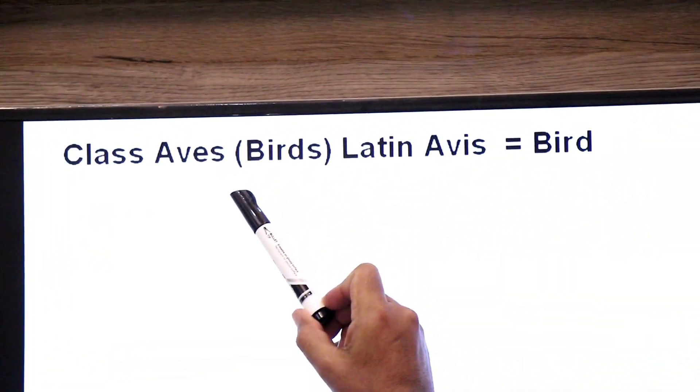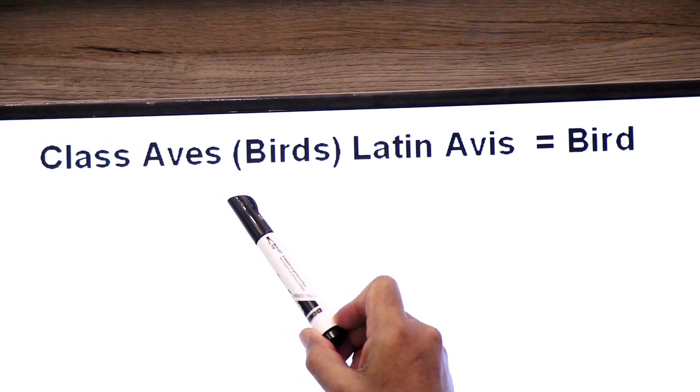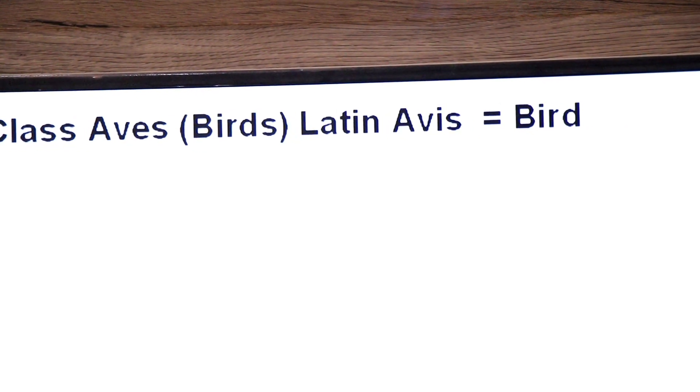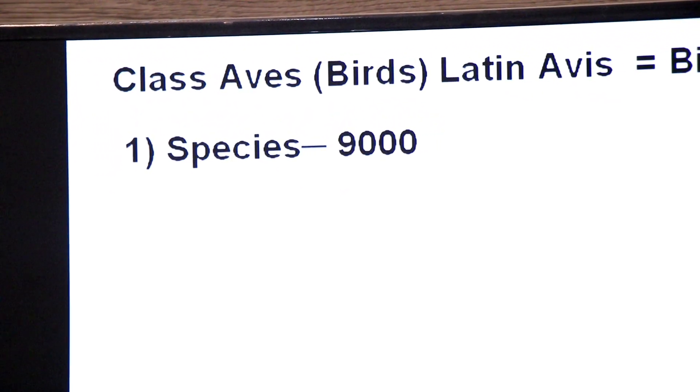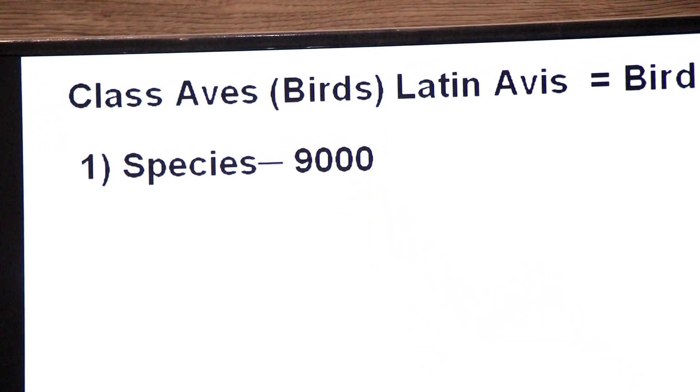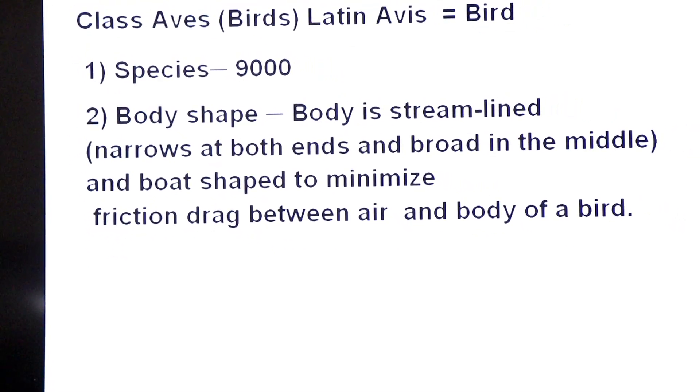Assalamu alaikum, namaste, hello dear students. Today we are discussing superclass Tetrapoda, and we are going to discuss another class: Class Aves, birds. It comes from the Latin word 'avis' meaning bird. Class Aves includes about 9000 species.